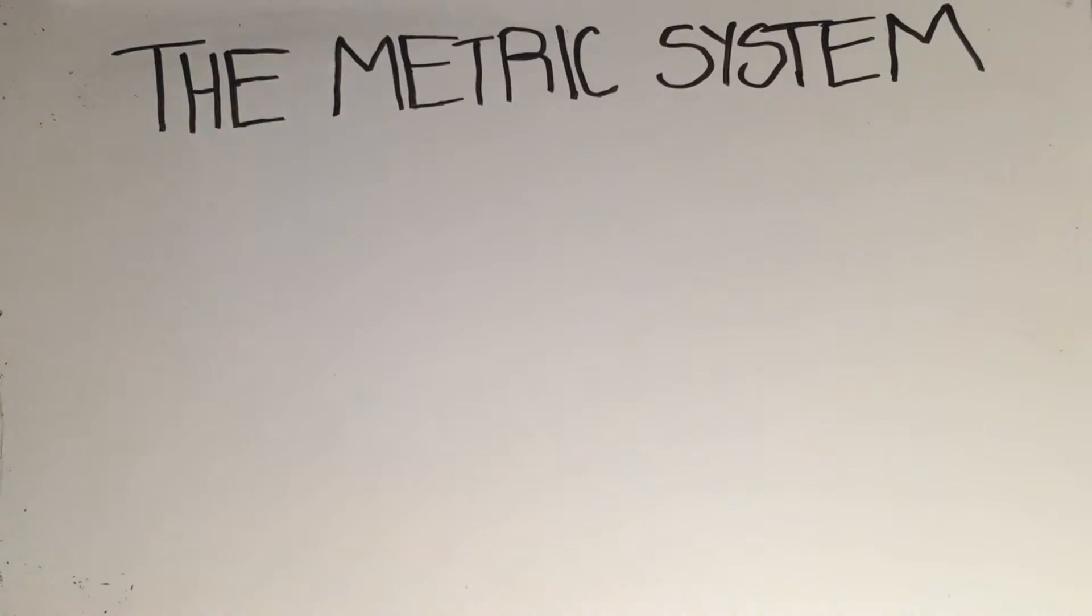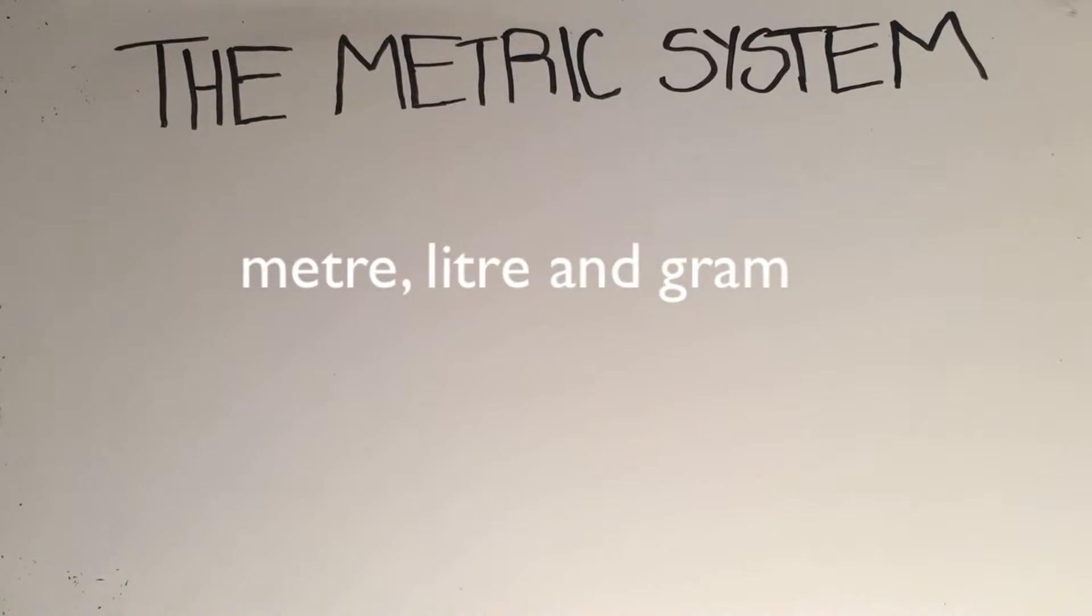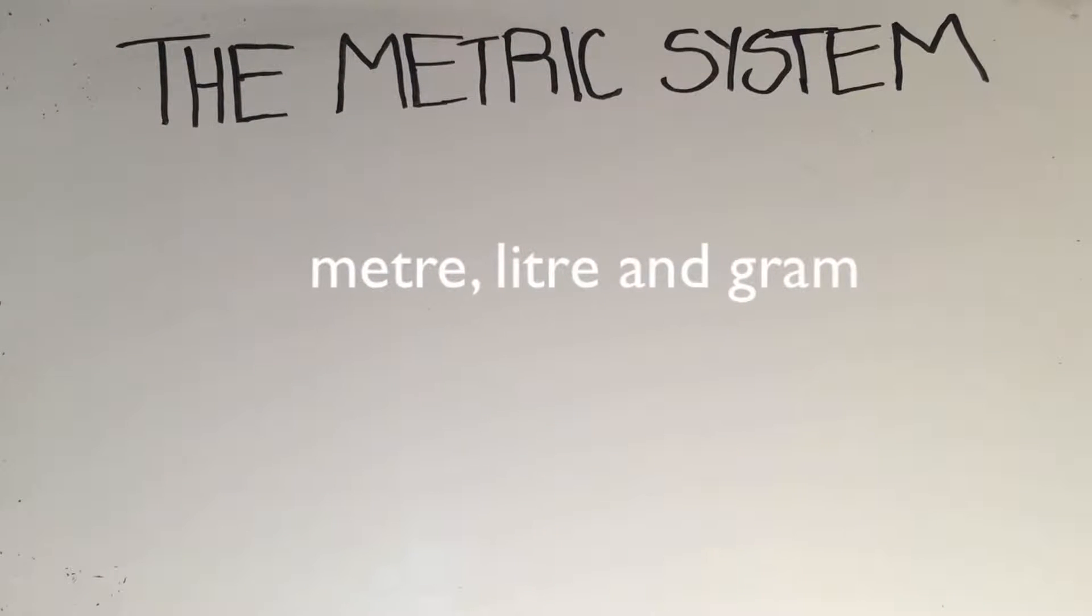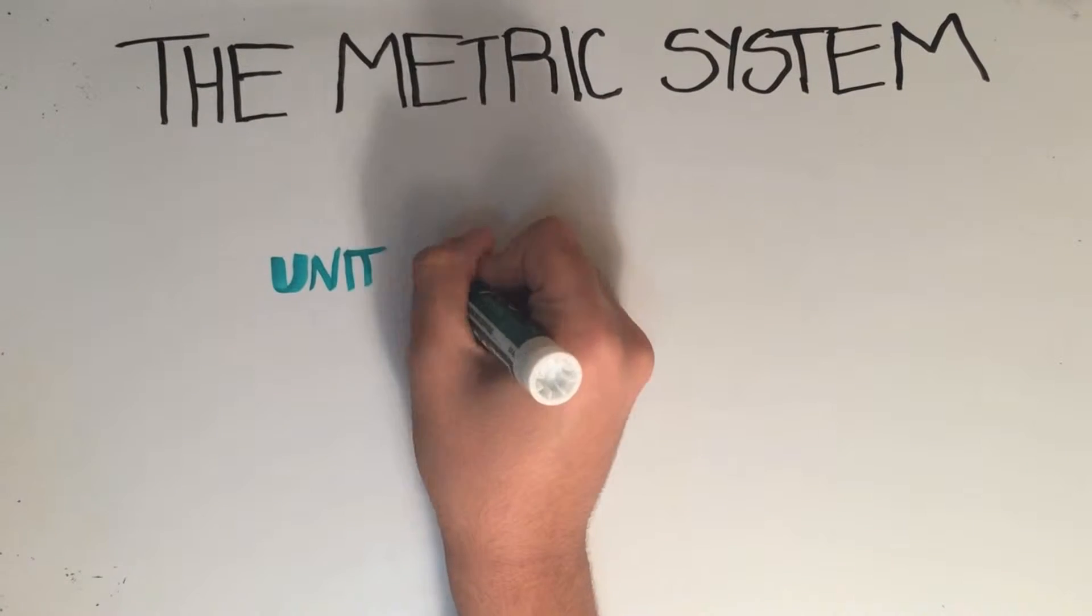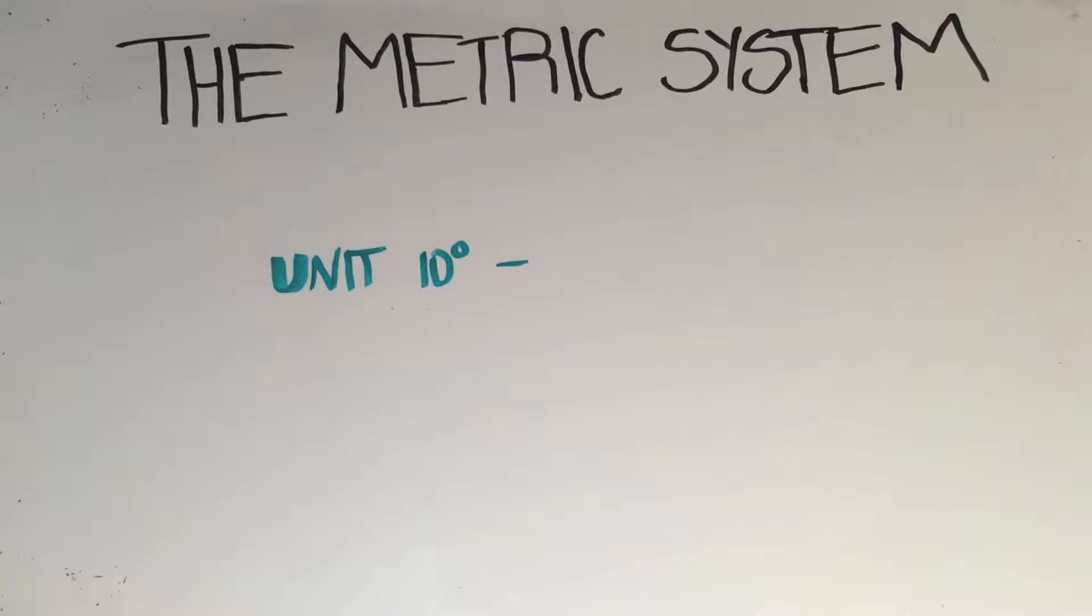So firstly we're going to discuss the metric system. The metric system is a decimal measuring system based on the meter, liter, and gram. The metric system is a system based on 10, so 10 to the power of any value would get you a spot or a prefix on the metric system.